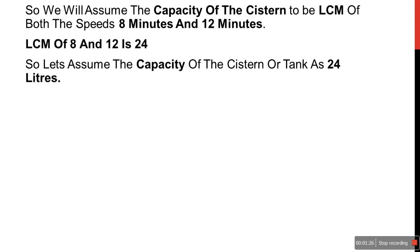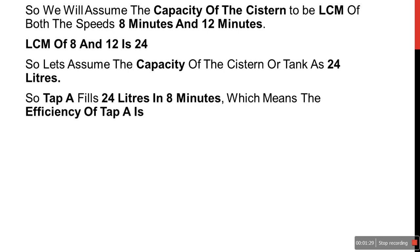Let's assume the capacity of the system or the tank as 24 liters. Tap A fills 24 liters in 8 minutes, which means the efficiency of tap A is 24 divided by 8, that is 3 liters per minute.